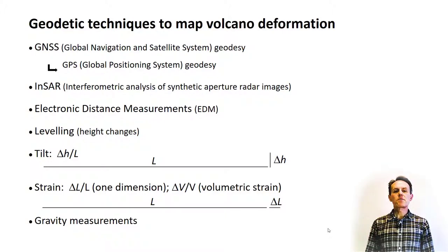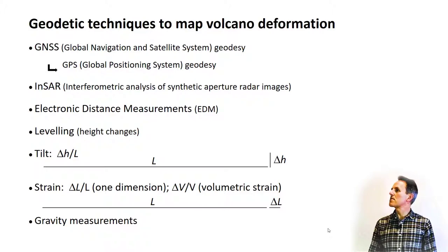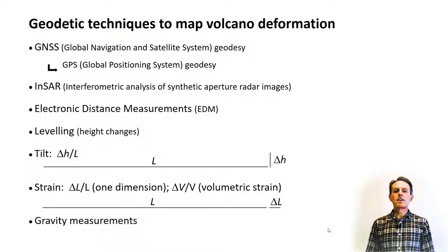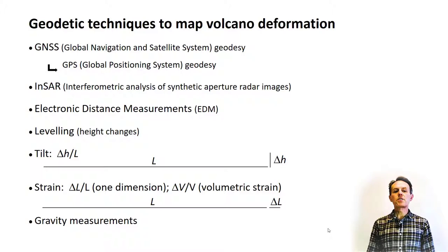One can also measure gradients in the deformation fields. If one measures the height change occurring over a certain distance during a time interval — that is, measures the delta height as shown in this figure — and divides by the length L, it is referred to as ground tilt. The simplest form of strain measurement is if one measures the change in length divided by the overall length itself. One can also measure volumetric strain, that is, change in volume divided by the total volume. There are various types of instruments and methods to measure tilt and strain, some with automatic instruments that can provide continuous information, referred to as tilt meters and strain meters, respectively.